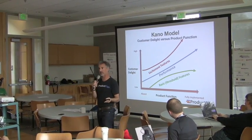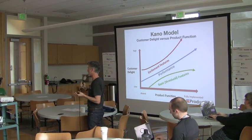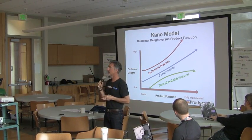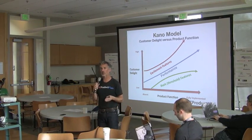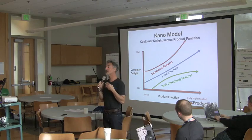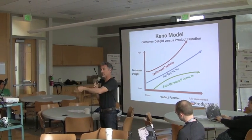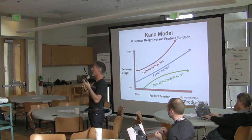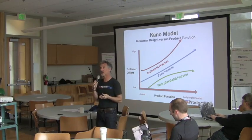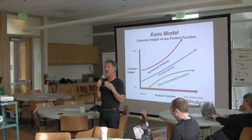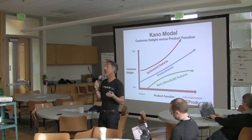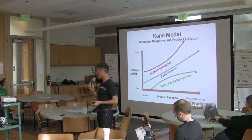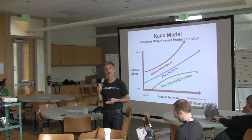Features fall into three different buckets. First, you have basic features — in the Kano model they're called threshold features. These are features that simply need to be there in order for your product to be competitive. Customers expect these features. If you don't have them or you lack too many of them, customers are going to move to a competitor. We call these dissatisfiers.